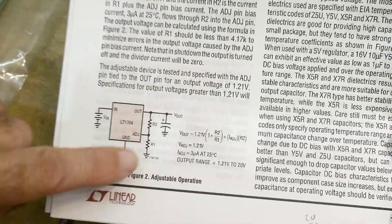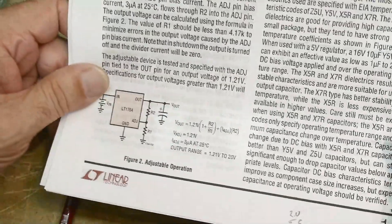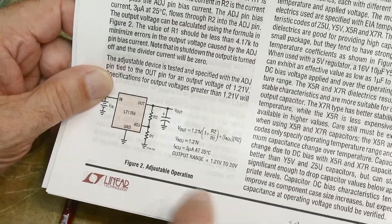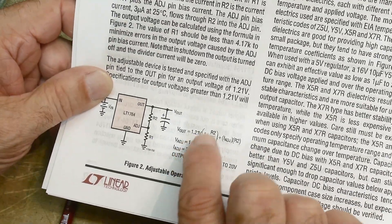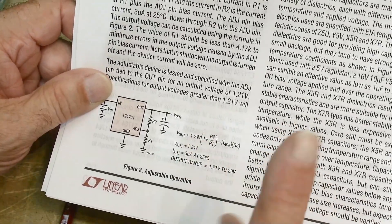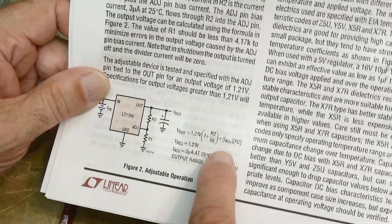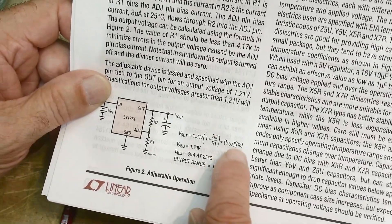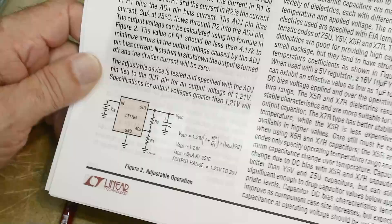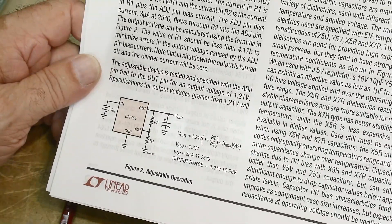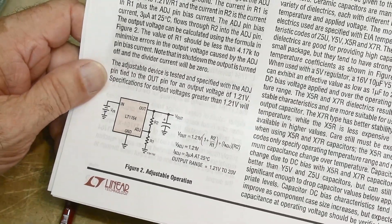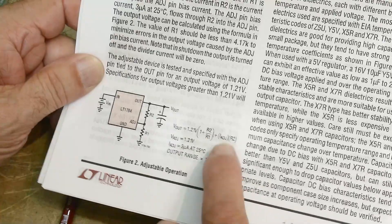But here's the formula. It's the standard resistor divider plus an extra term, which is the adjust current times R2. And the adjust current is 3 microamps. So it's not a lot, but if you want to be accurate, you can throw in that 3 microamps in there and make it a little more accurate.